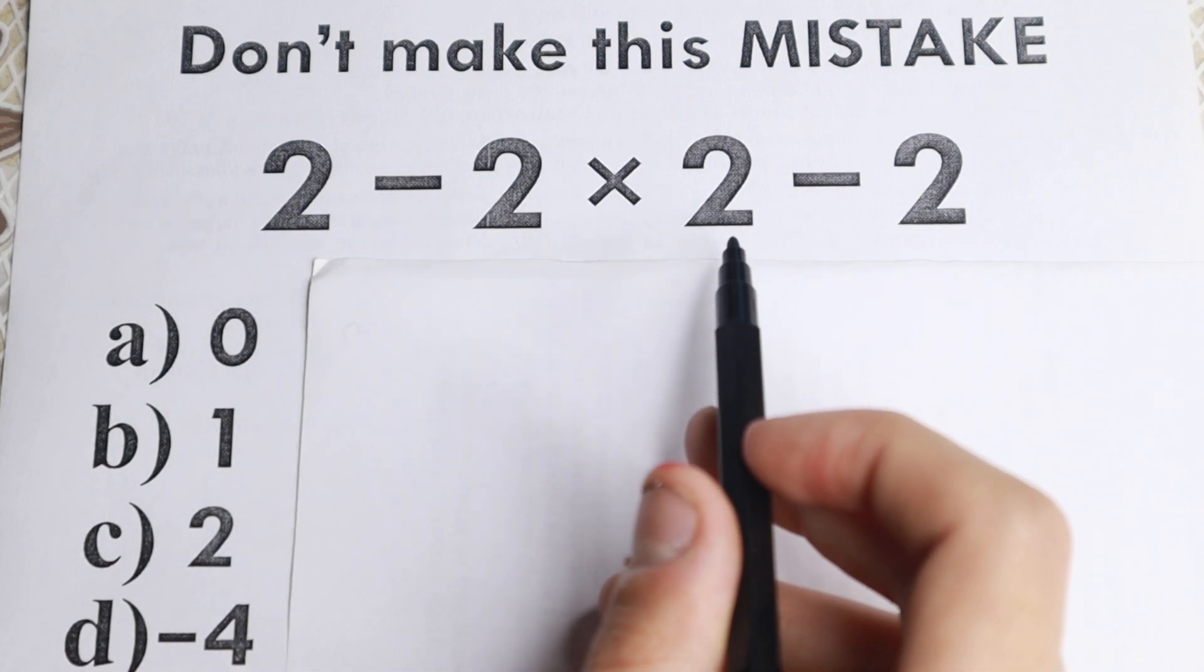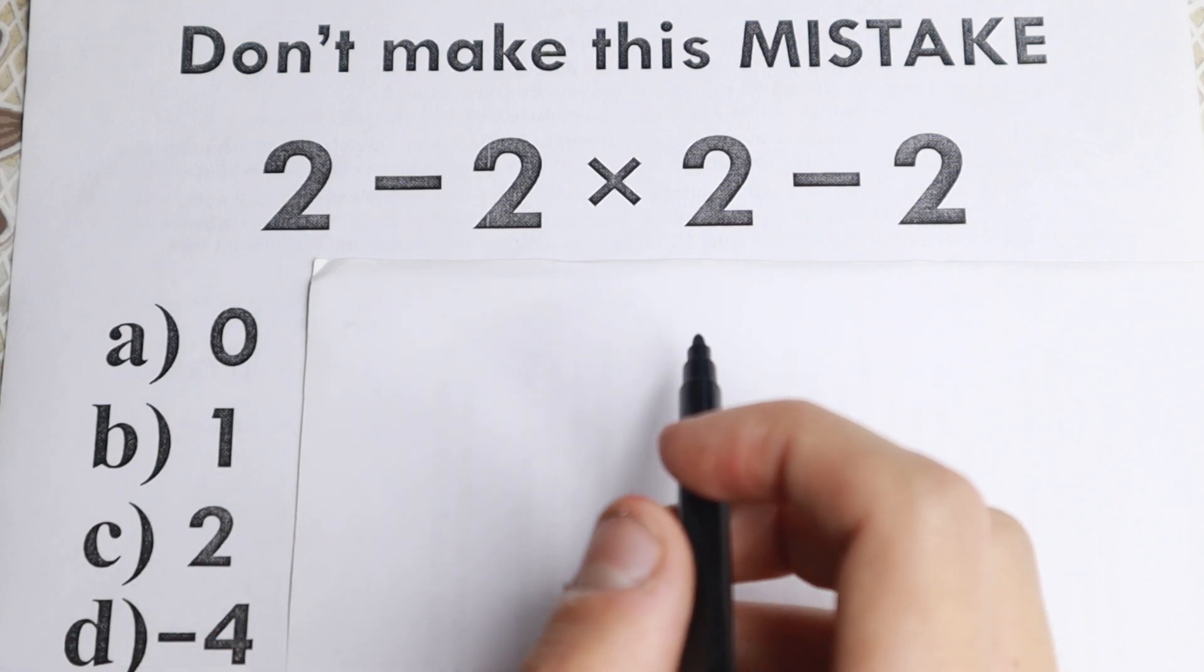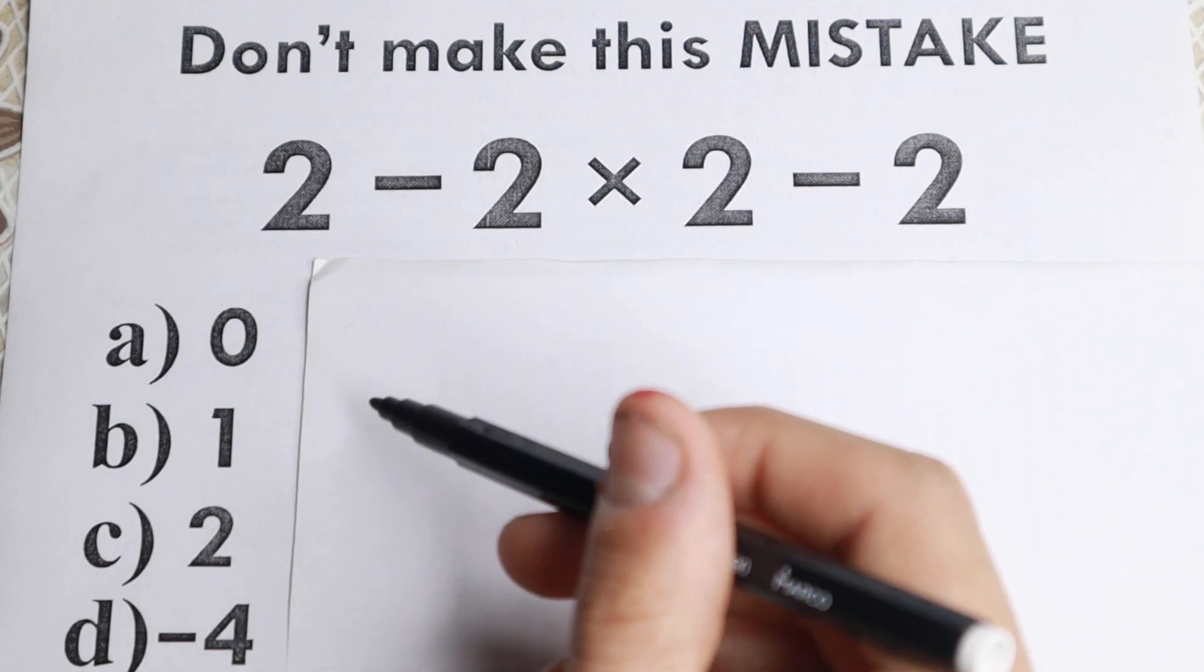We have 2 minus 2 times 2 minus 2. It's a very simple problem on the first side, but a lot of students do this common mistake, and I show this mistake later. So let's choose your correct option. What do you think is the correct option to this problem?